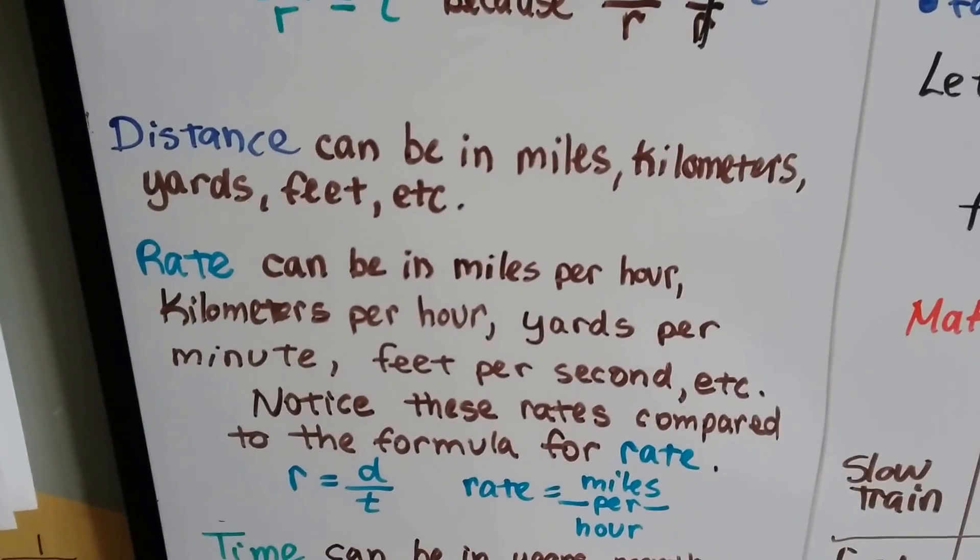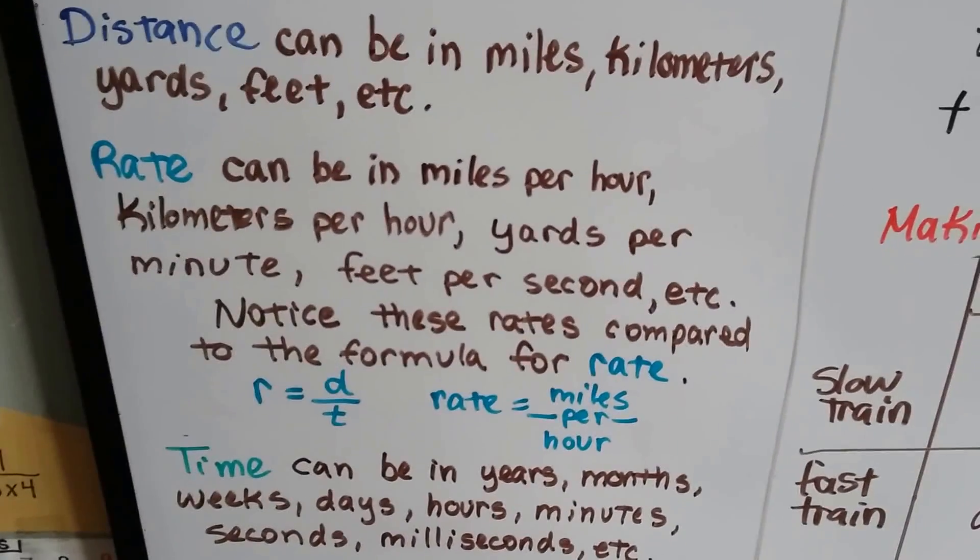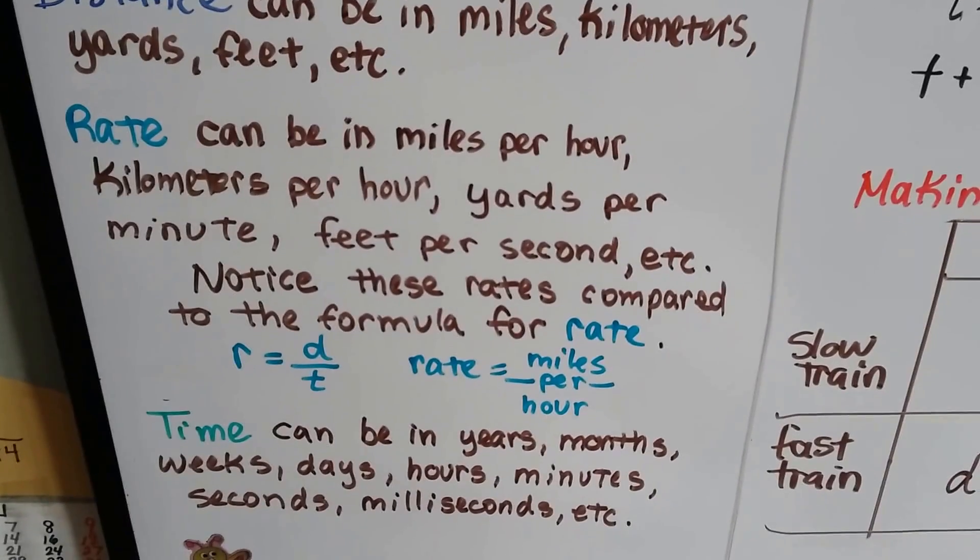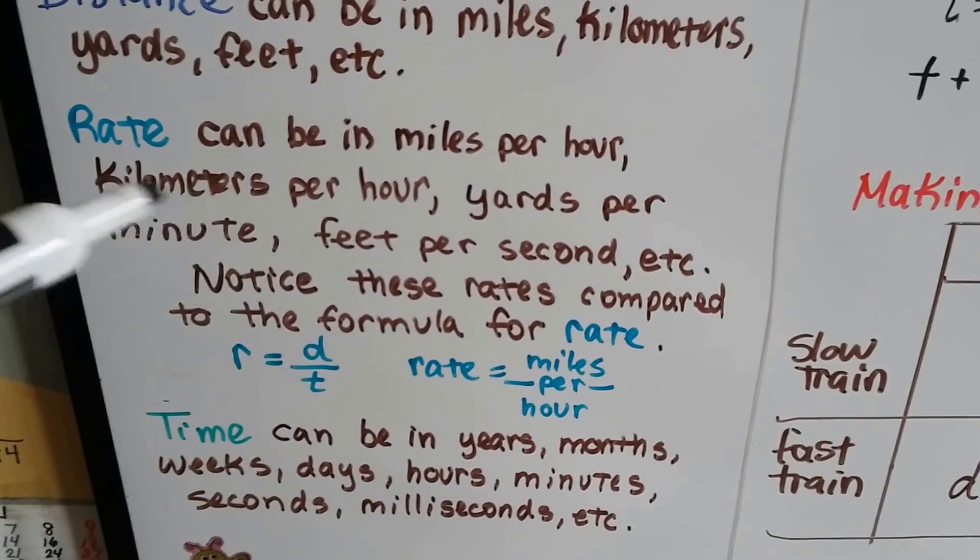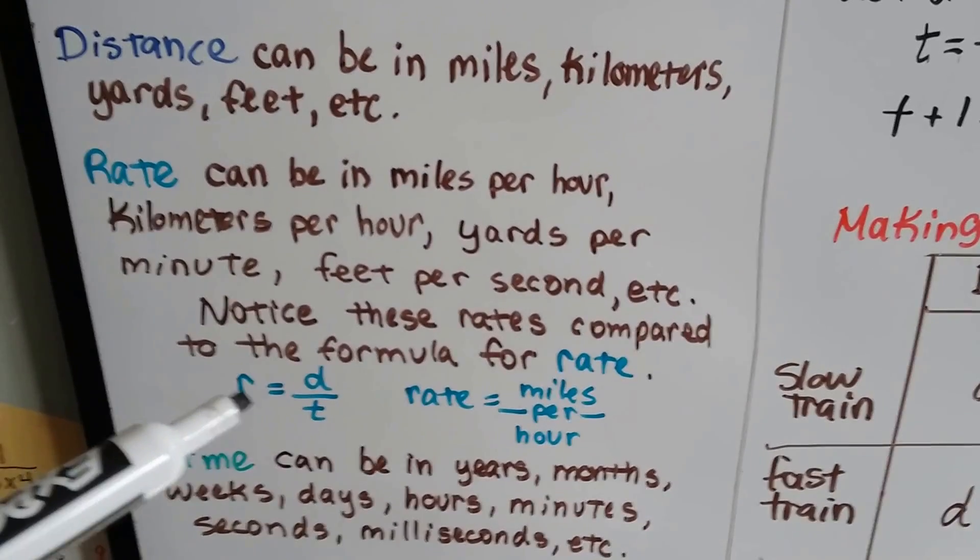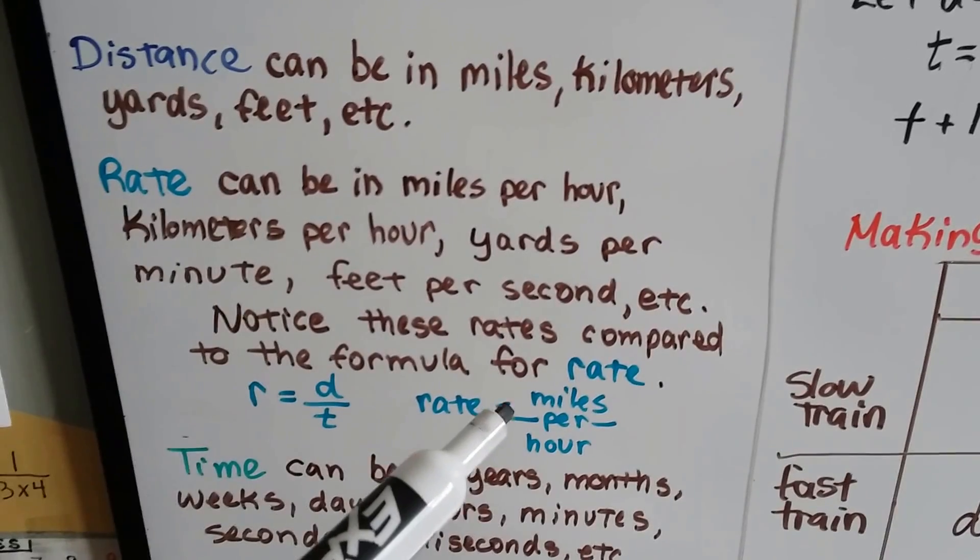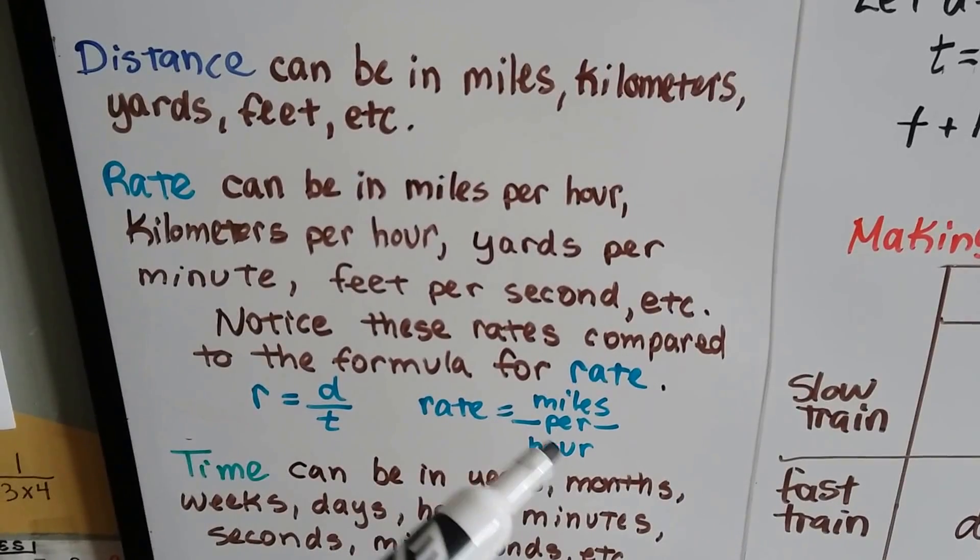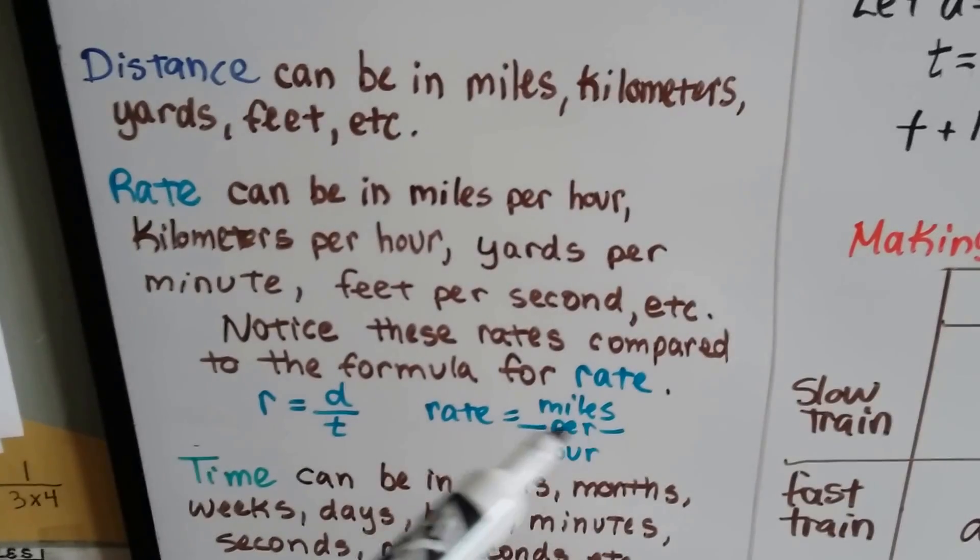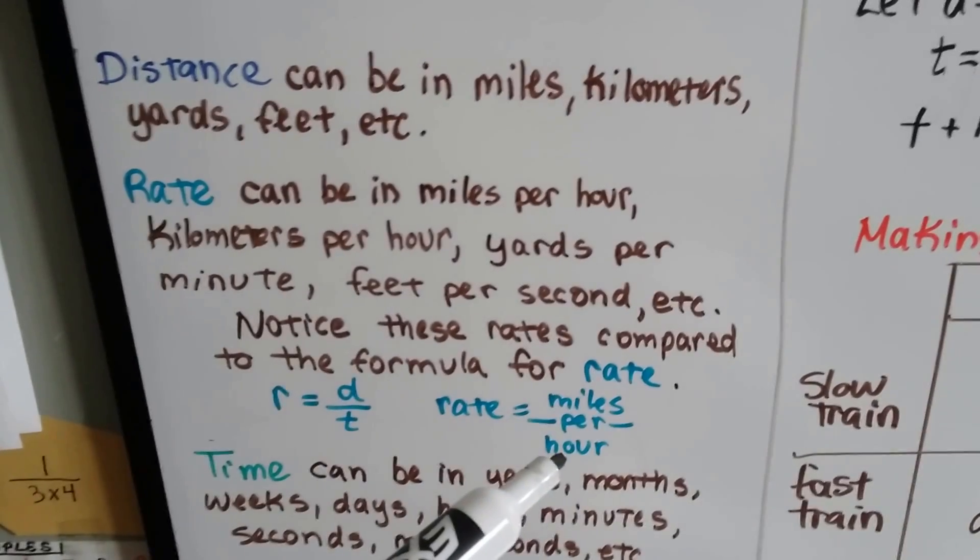Distance can be miles, kilometers, yards, feet, inches, and so on. Rate can be in miles per hour, kilometers per hour—that's how fast we're going—yards per minute, feet per second. Notice that the formula for rate, r equals distance divided by time, instead of this fraction line for division, that's where the per goes. We've got distance in miles or kilometers per the time, the hour.